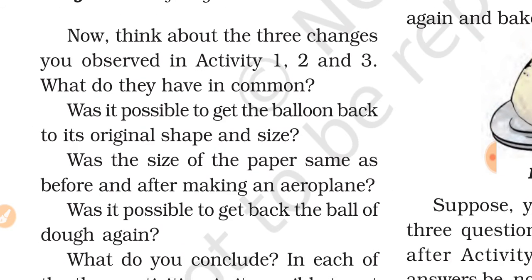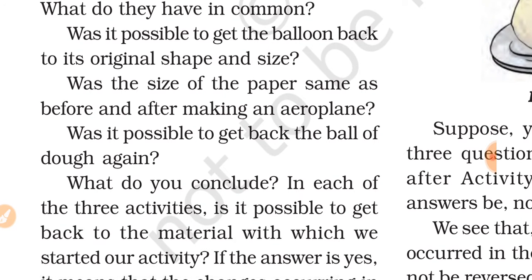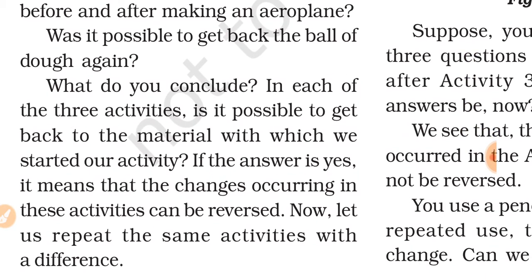Now think about the three changes observed in activities 1, 2, and 3. In activity one we blew a balloon, in activity two we made a paper airplane, and in activity three we changed the shape of dough into a roti and back. What is common in these three activities? Was it possible to get the balloon back to its original shape and size? Yes. Was the size of the paper the same before and after making the airplane? Yes. Was it possible to get back the ball of dough? Yes. In each of the three activities, it is possible to get back the material we started with. This means the changes occurring in these activities can be reversed — these are reversible changes.